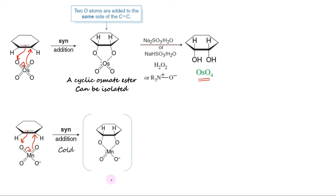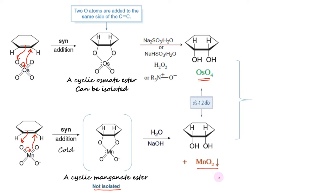However, the manganate ester is not isolable. The basic solution hydrolyzes the manganate ester, liberating the glycol and producing a brown precipitate of manganese dioxide, MnO2. Overall, both reagents produce cis-1,2-diol through syn-dihydroxylation.